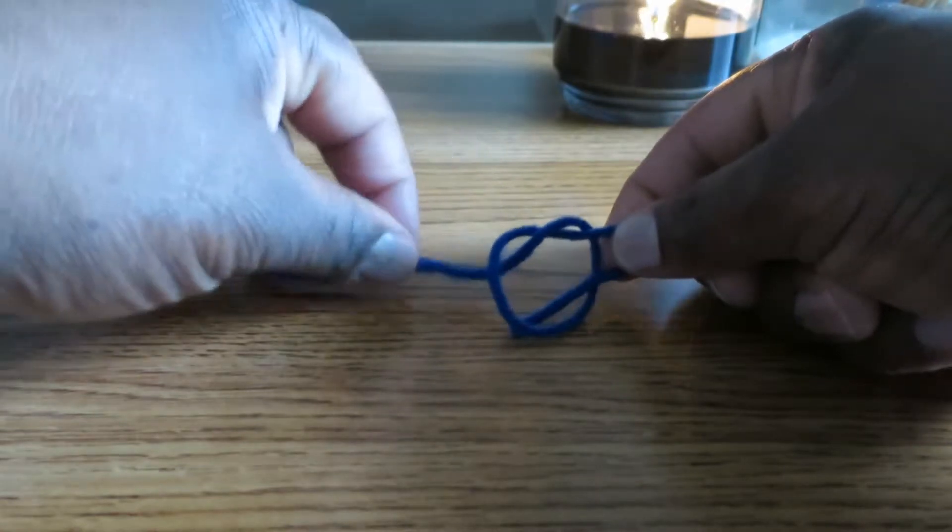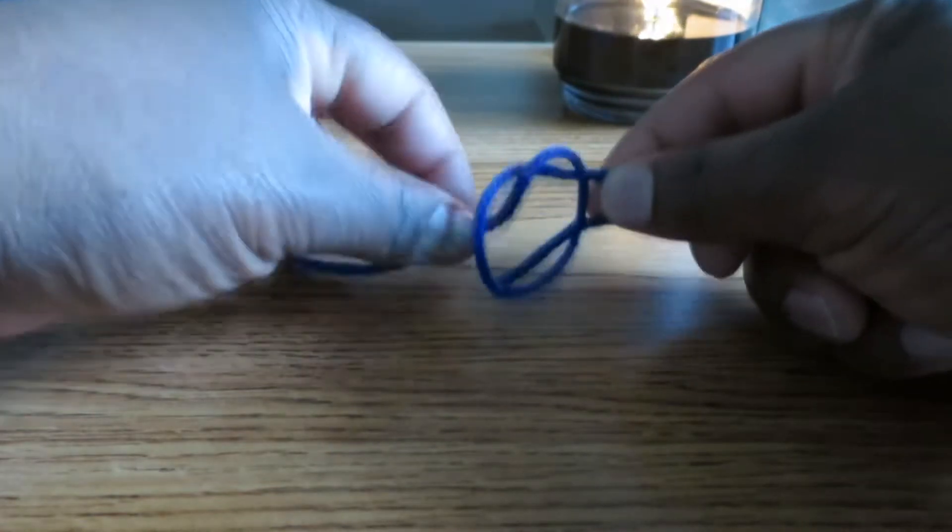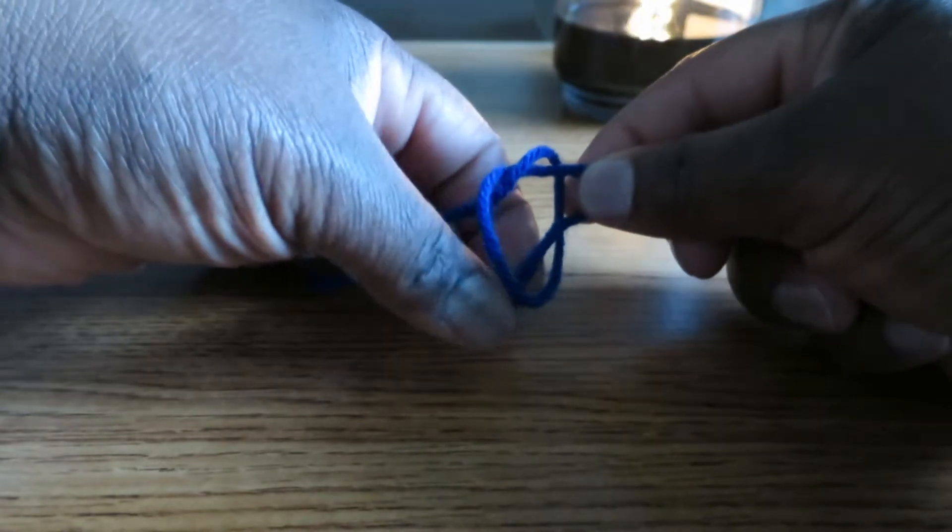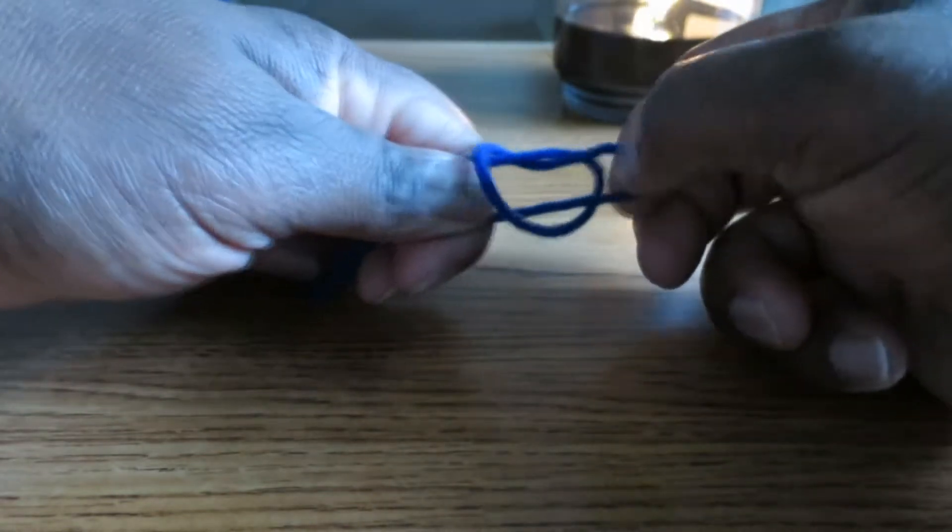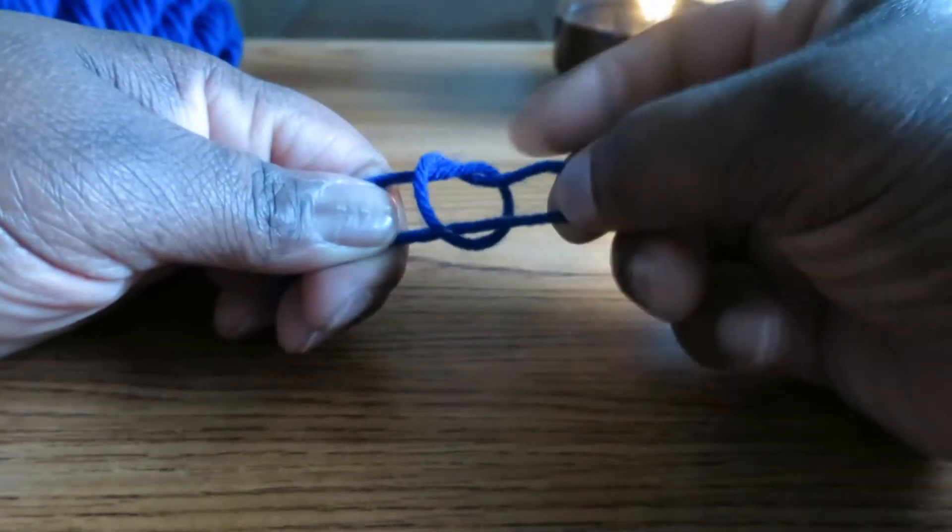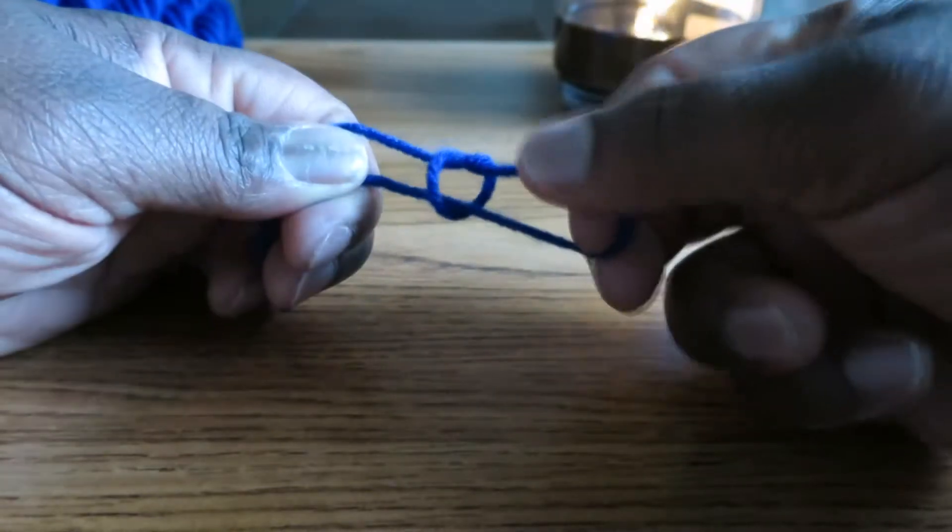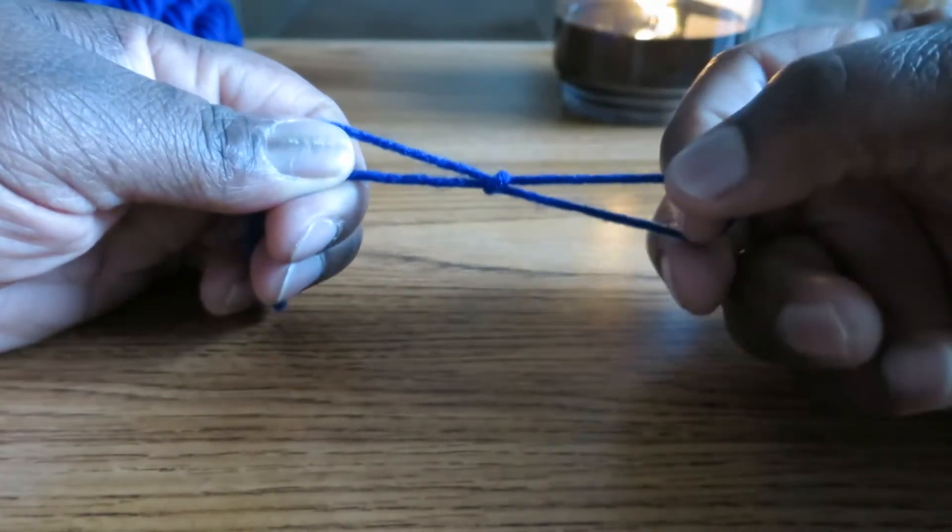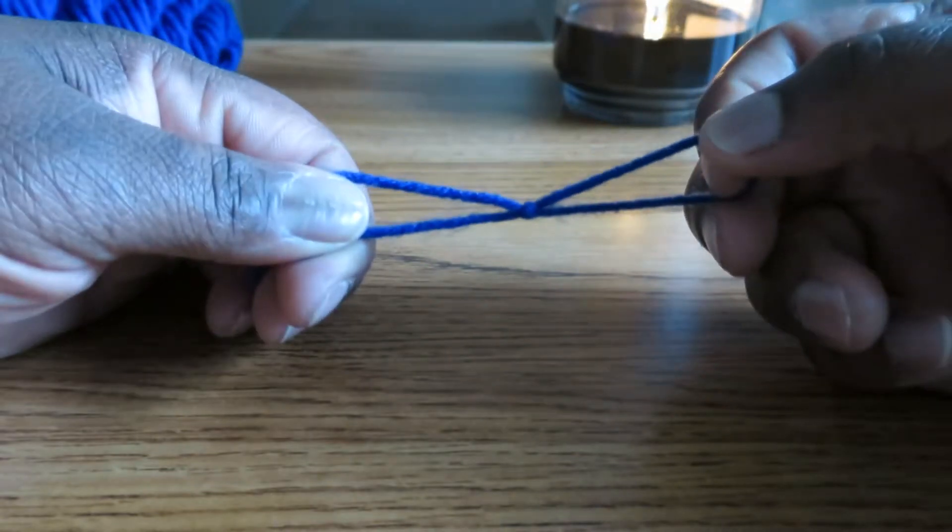Now we have this part of the yarn, which is attached to the skein, as well as this tail. And we're going to grab both. And while we're grabbing, we're going to be pulling with the right hand on that loop. And it's going to get bigger. And that right there is how you make your slipknot.